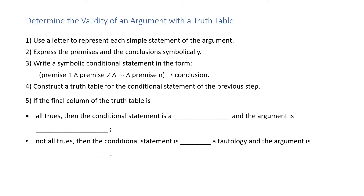Determine the validity of an argument with a truth table. Step 1: use a letter to represent each simple statement of the argument. Step 2: express the premises and conclusions symbolically. Step 3: write a symbolic conditional statement in the form — premise 1 ∧ premise 2 ∧ ... ∧ premise n → conclusion. Step 4: construct a truth table for that conditional statement. Step 5: if the final column is all trues, the conditional is a tautology and the argument is valid; if not all trues, the argument is invalid.